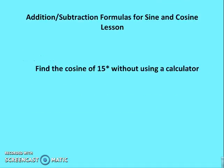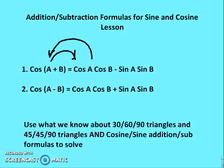So the question is, how do we find the cosine of 15 degrees without using a calculator? The answer is we're going to use the angle addition and subtraction formulas for sine and cosine to figure that out.